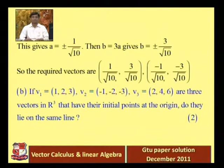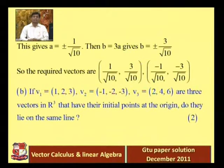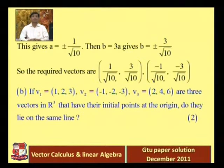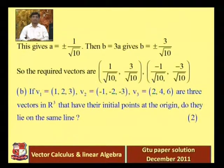Question 1b: Given v₁ = (1, 2, 3), v₂ = (−1, −2, −3), and v₃ = (2, 4, 6) as vectors in R³ with initial points at the origin, do they lie on the same line? We need to check whether these three vectors lie on the same line.